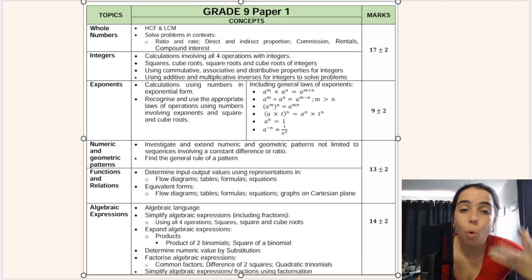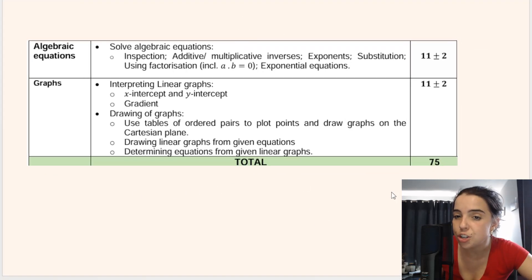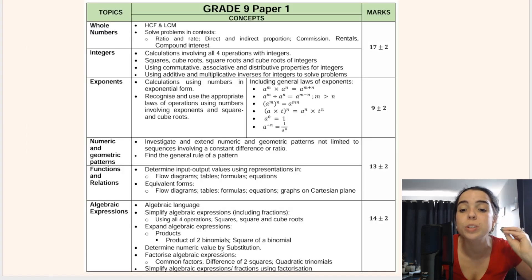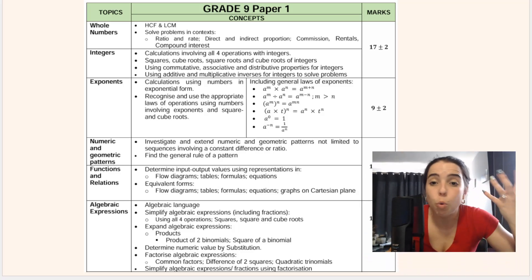So here's a summary of all those concepts. And if your test is out of 75, and these are guidelines that are basically put forward by the Department of Education, then this is the approximate mark allocation. But remember, schools can do different things. It depends on your school, depends on your curriculum. It depends on a lot of things. So please check with your teacher before you decide to study for what paper.